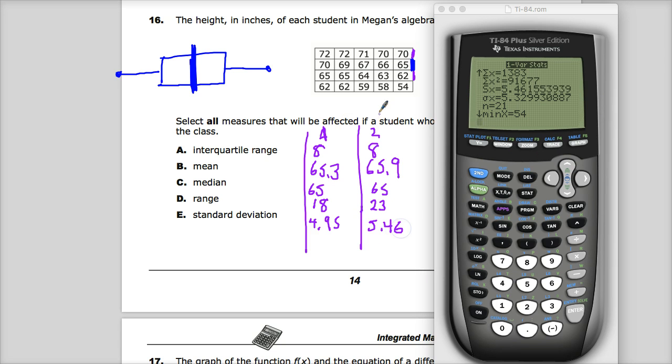So let's look for any differences. Interquartile range is the same. Mean value has changed. Median value is the same. I'm putting checks next to the ones that are the same. Range value would be different, so that's a change. And the standard deviation changed as well.